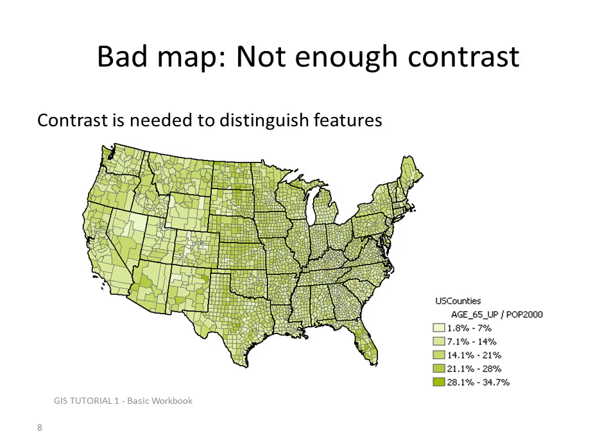Here's a good example of a bad map. It doesn't have enough contrast. Contrast is needed in order to distinguish features, so in this case we have a hard time distinguishing the data being shown. This is supposed to be a map of U.S. counties age 65 and up, and simply because of the way the map is designed in terms of the use of color, it's not effective at communicating a message.